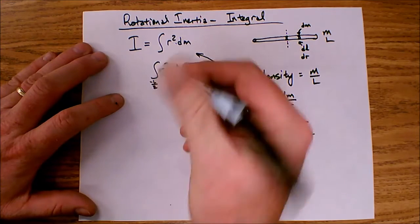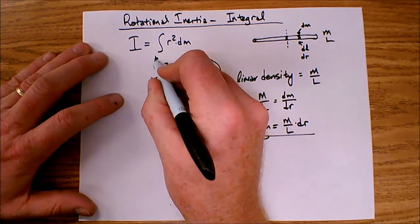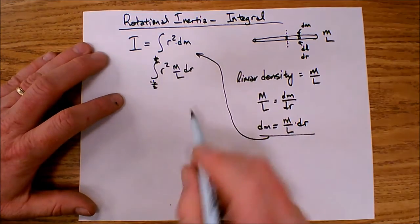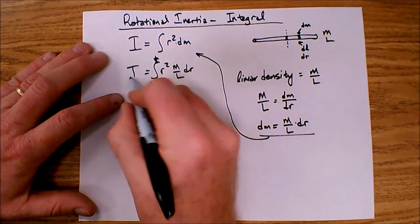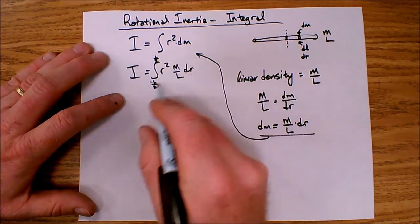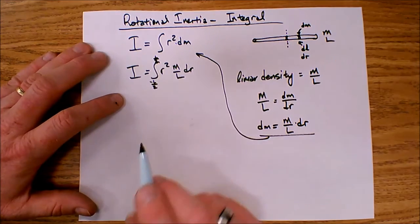So I'm going to go ahead and put that in here. My beginning point goes on the bottom and my ending point goes on the top. So I've got negative l over 2 on the bottom and l over 2 on the top. Those are the limits of my integral. So my inertia equals the integral of r squared m over l dr evaluated from negative l over 2 to positive l over 2.